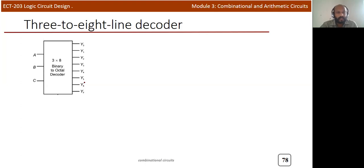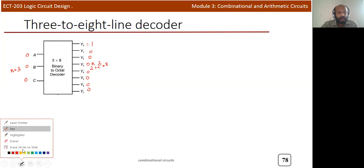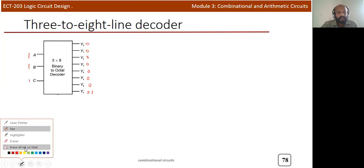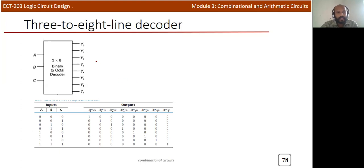Now let's discuss the 3-to-8 line decoder, where n=3 and 2-cubed = 8 outputs. In this binary 3-to-8 decoder, inputs are A, B, C. If the input is 0 0 0, then Y0 will be 1 and all other outputs will be 0. If all inputs are 1 1 1 (equal to 7), then Y7 will be 1 and all other values will be 0. With three inputs you get eight combinations, corresponding to output lines Y0 through Y7.